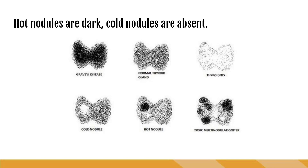It's important to note that hot nodules are going to appear as darker areas within a normal thyroid. Those hot nodules are producing their own T3 and T4, so they're picking up more iodine than the rest of the normal thyroid tissue. We can also have something called a cold nodule, where there's an absence of the iodine tracer because that area of the thyroid is not functioning and not picking up the iodine. Hot nodules tend to be benign, while cold nodules are actually more concerning for malignancy.